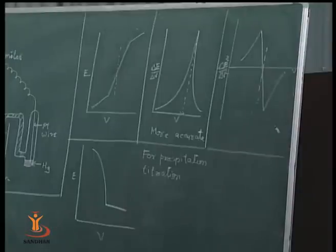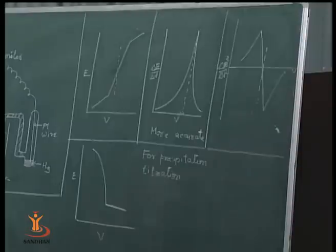In precipitation titration, as shown on the board, silver nitrate is titrated with NaCl solution. When standard AgNO₃ solution is added from the burette, precipitation starts. At the endpoint, all ions are consumed or precipitated. After the endpoint, we get a sharp, clean, horizontal graph as shown on the board.